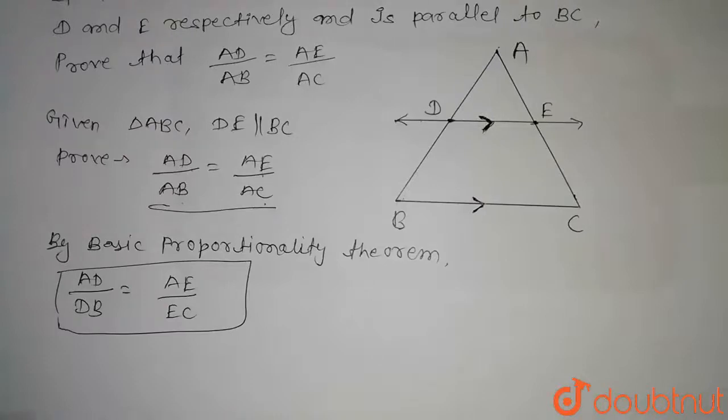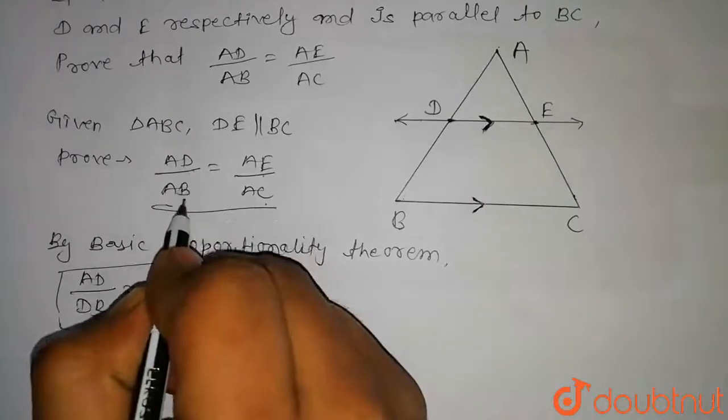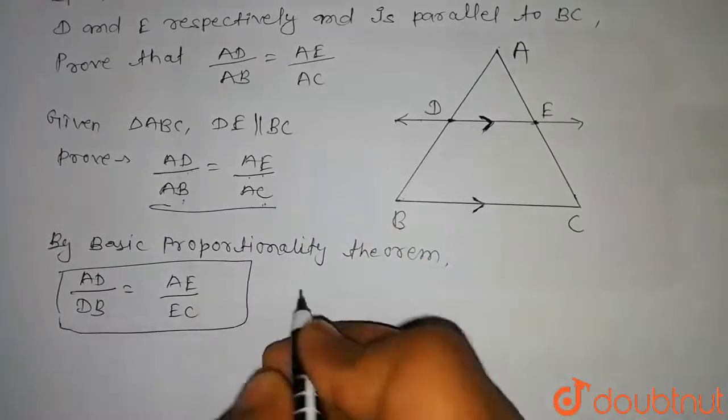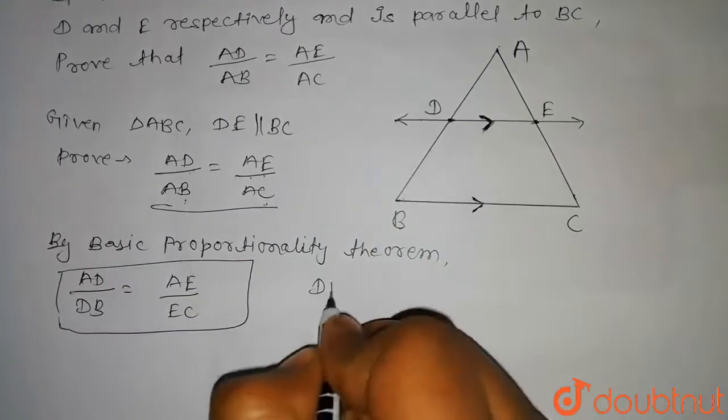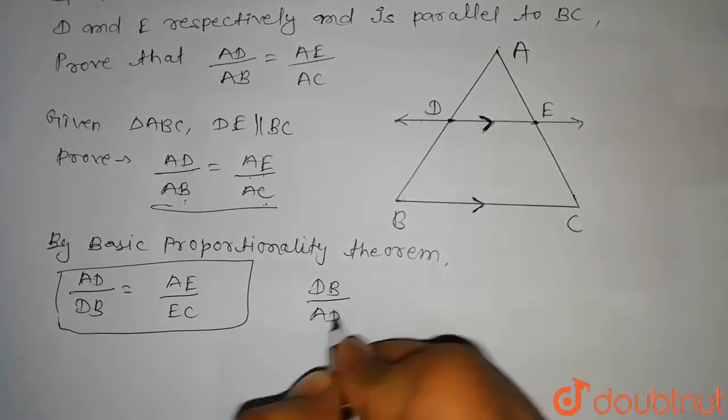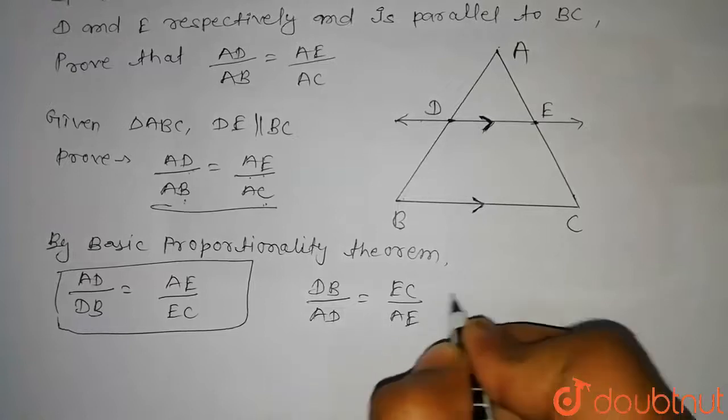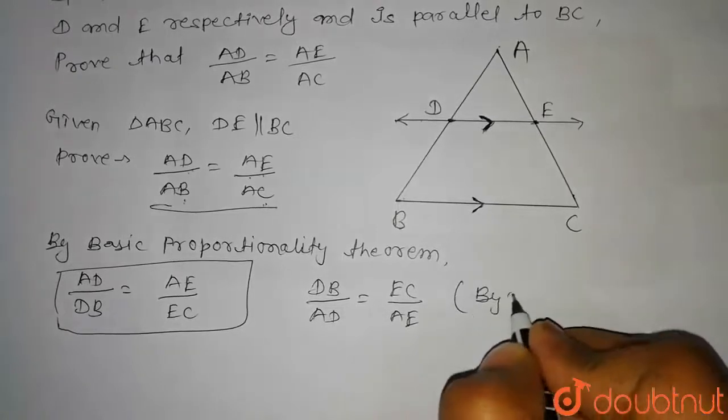we can write AD divided by DB equal to AE divided by EC. Now, in this question we have to prove AD divided by AB equal to AE divided by AC. So,